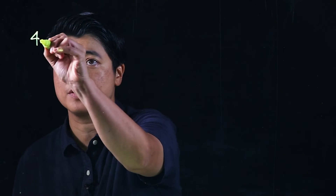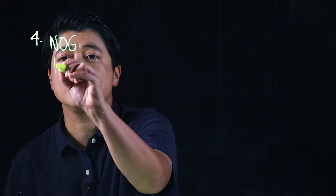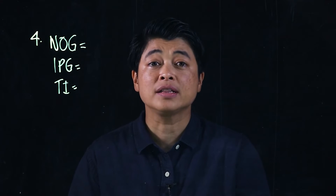Our problem comes from page 129, number four. Mrs. Ravi has 40 pupils in her class. Her class is divided into groups of 10. How many groups are there in her class? So: number of groups, items per group, and total items.